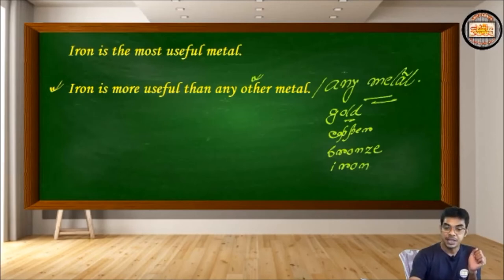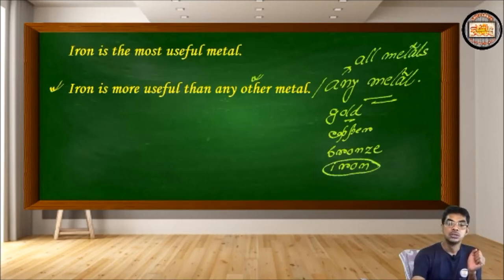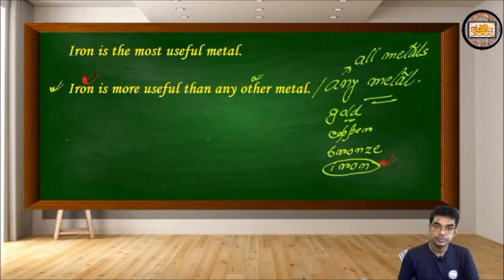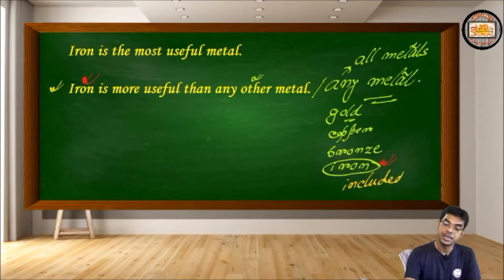Because here any metal means, I've told you, it's all metals. So if it's all metals, it includes iron. So at some point we would consider iron with iron and that's a mistake. So when we say any metal, iron gets included in it. So iron is included in the list because we haven't put the word other there.